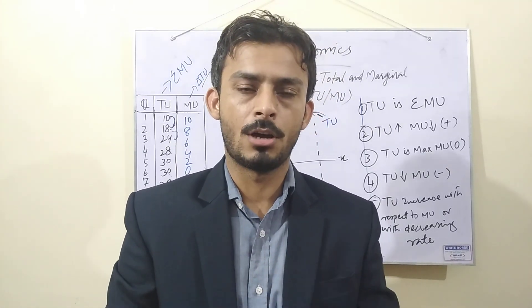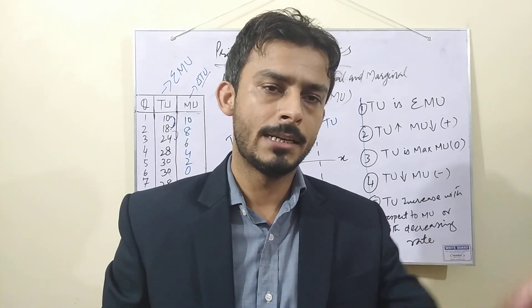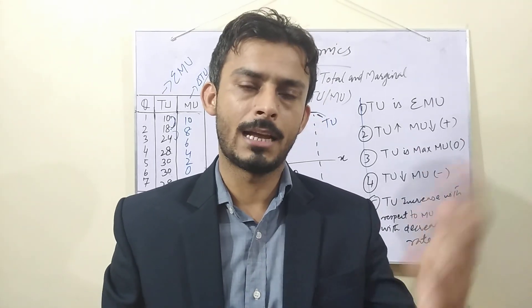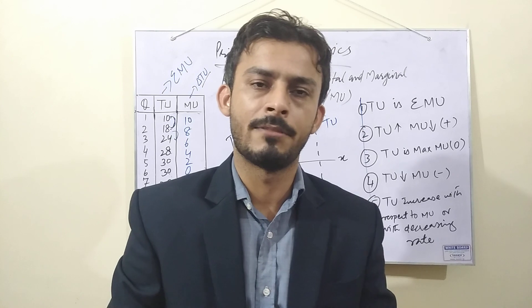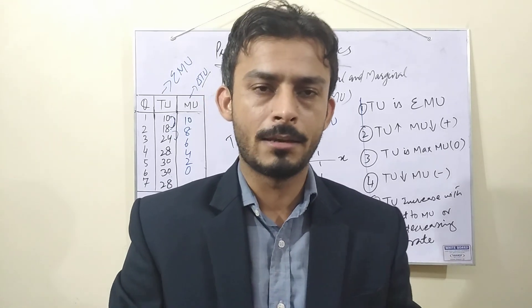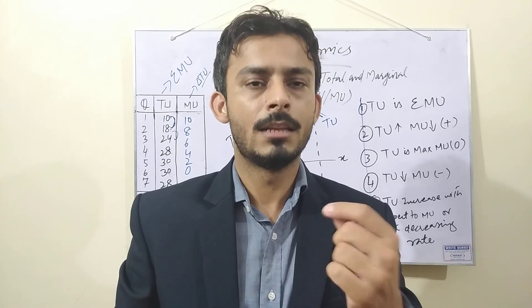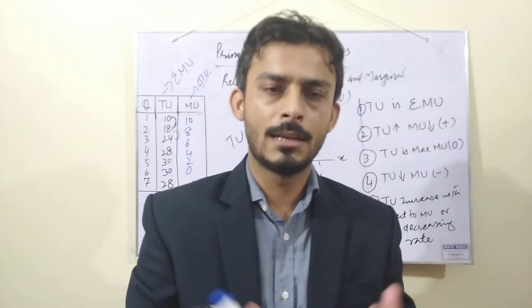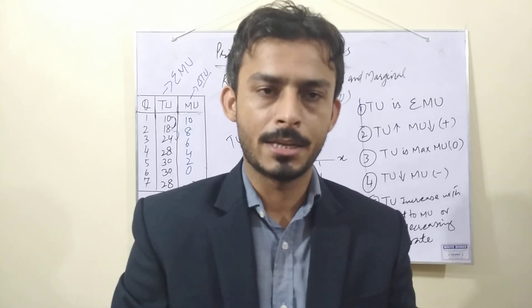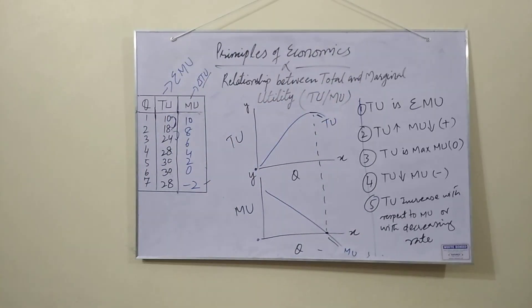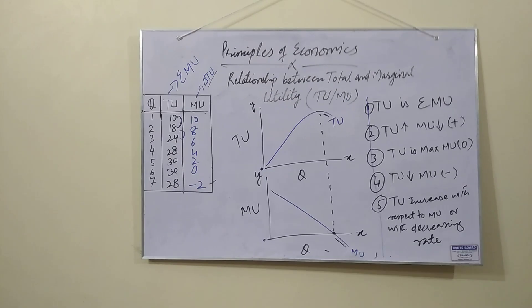So these are 5 relationships between total utility and marginal utility. I hope you understand today's concept. Like this video. And Law of Diminishing Marginal Utility you can see in the description link. Like this video. If you have questions then comment and subscribe to my channel Nadeem Academy so that you will see time to time. Thank you very much.